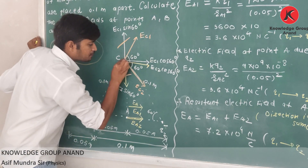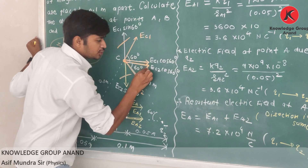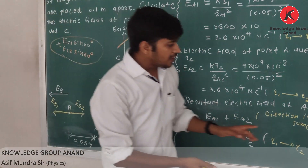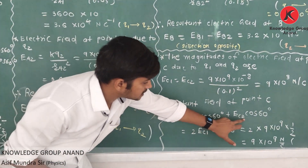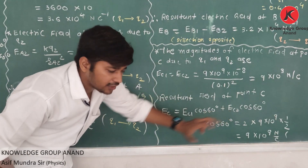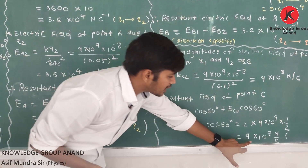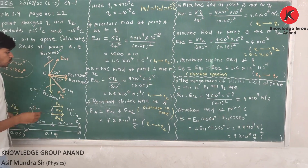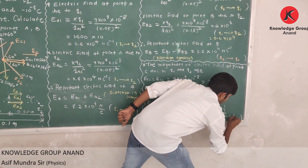So the resultant electric field at point C is EC1·cos60 plus EC2·cos60, because they have the same direction. We can write EC = 2·EC1·cos60. Substituting, it is 2 times 9 into 10 raised to 3 times cos60 (which is 1/2), so the 2 cancels and the answer is 9 into 10 raised to 3 newtons per coulomb. The resultant direction is towards the right.